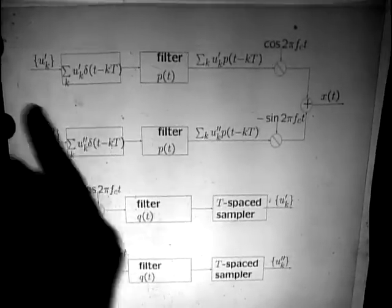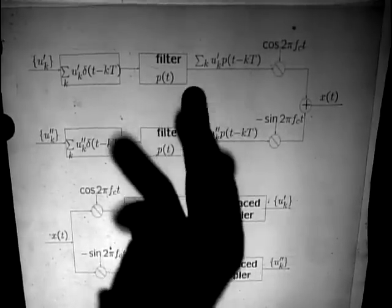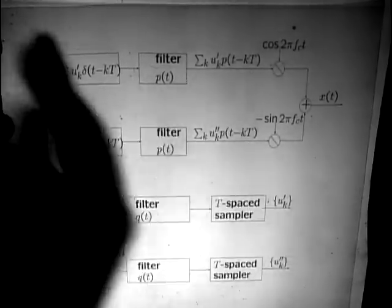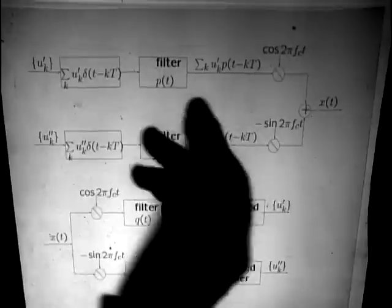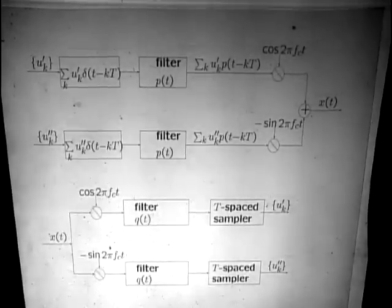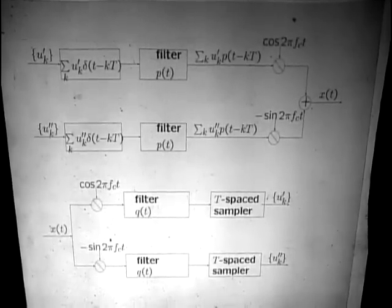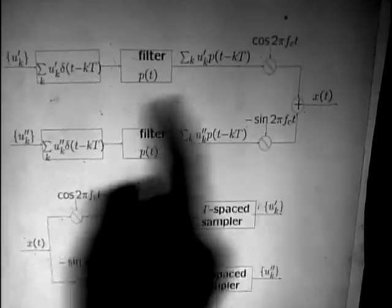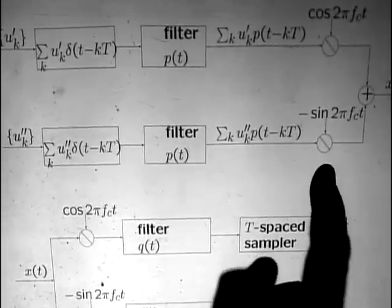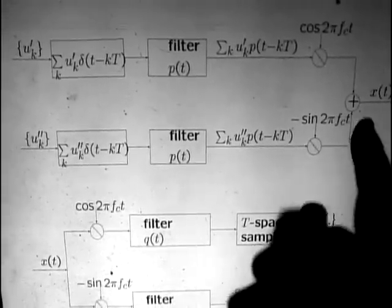What happens is you get this pulse train, which is just a sum of these pulses, and they all interact with each other. So at this point we have inter-symbol interference. We multiply this by a cosine wave, and we multiply this by a sine wave.